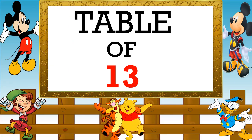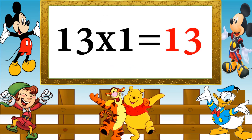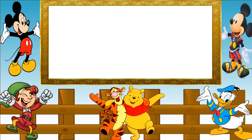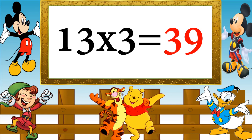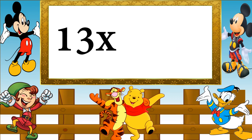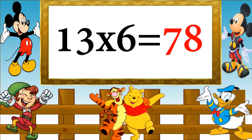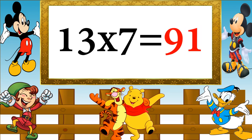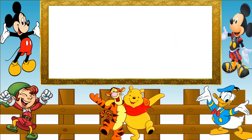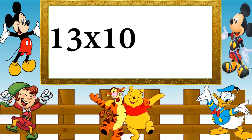Table of 13. 13 ones are 13, 13 twos are 26, 13 threes are 39, 13 fours are 52, 13 fives are 65, 13 sixes are 78, 13 sevens are 91, 13 eights are 104, 13 nines are 117, 13 tens are 130.